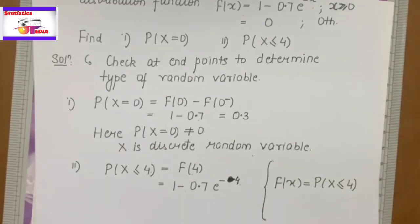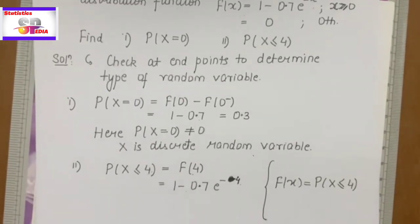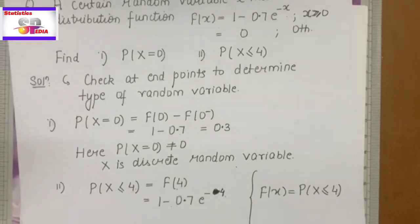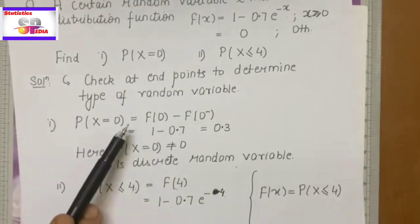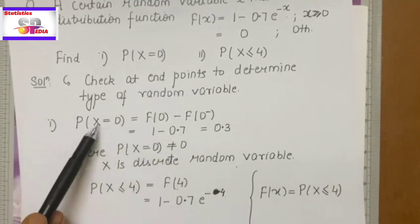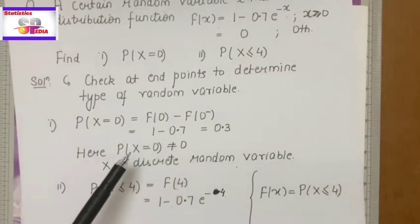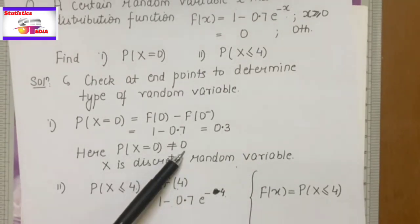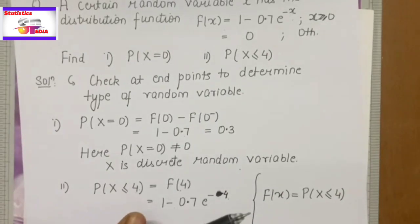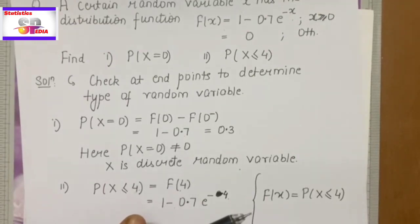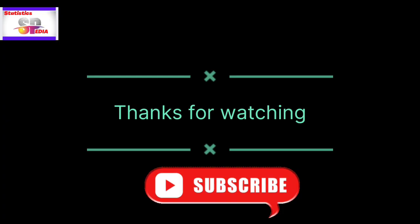In today's lecture we have seen the working rule: if a CDF is given, how to determine the type of the random variable — whether it is discrete or continuous. We check at a point, specifically at the end points: if the probability is 0 then it is continuous, and if it is not equal to 0 then it is discrete. In the next lecture we will see short trick 2, which is again based on the CDF. Thank you, students!